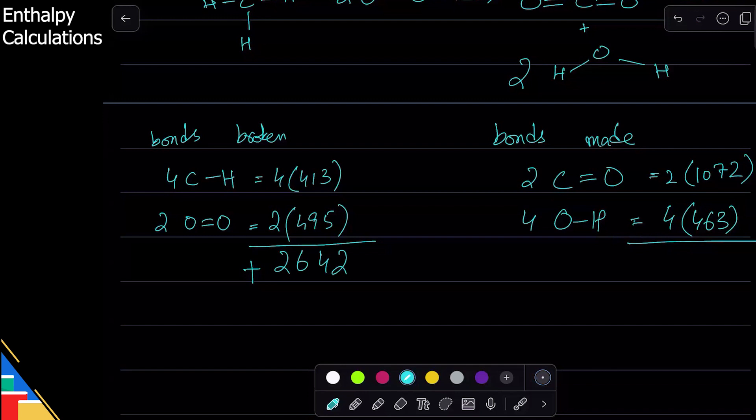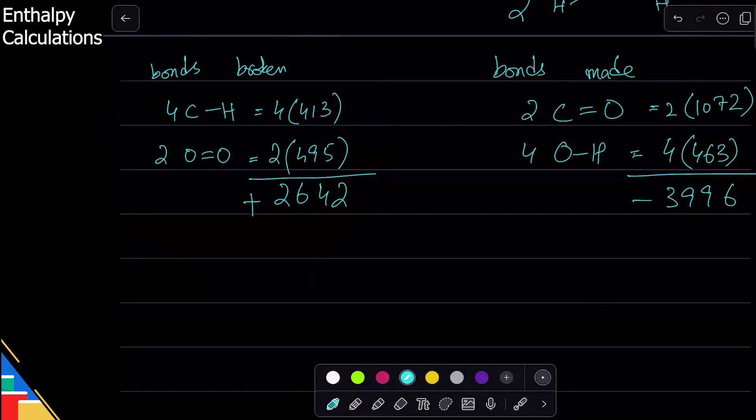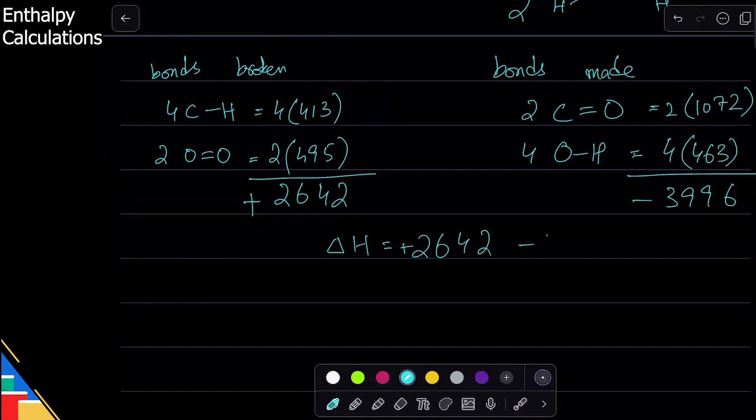And then on the other side, I have 2 times 1072 plus 4 times 463, so that is 3996. So this is the total energy of bonds made, which will be released. So delta H will be 2642 minus 3996. You will see that this is going to be negative. So I'm getting negative 1354 kilojoules.